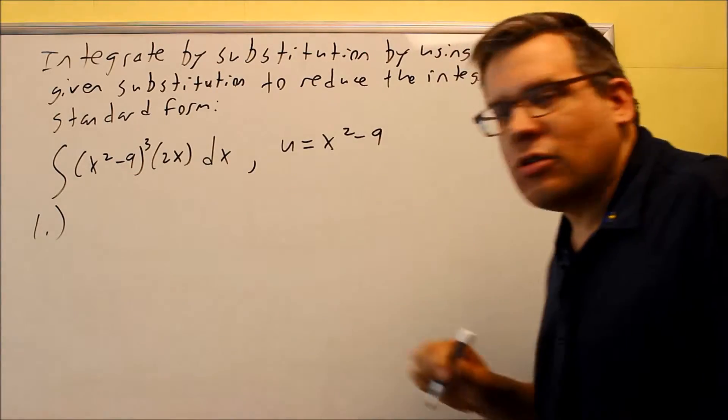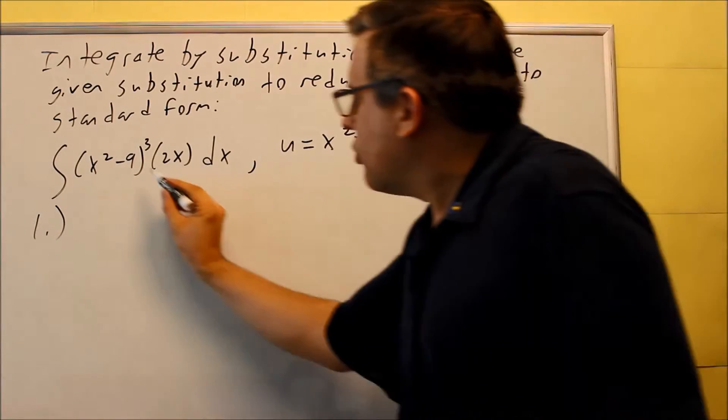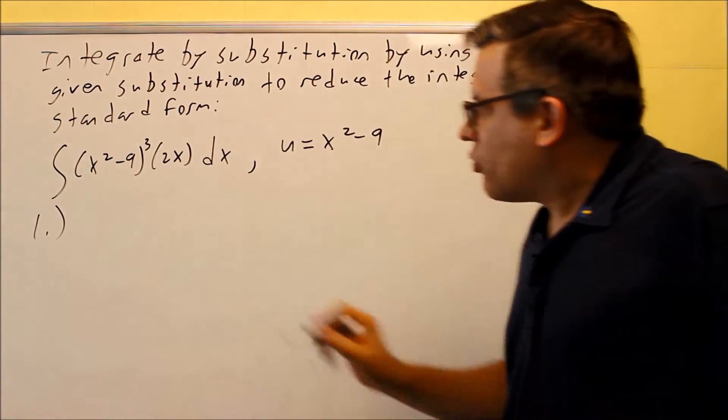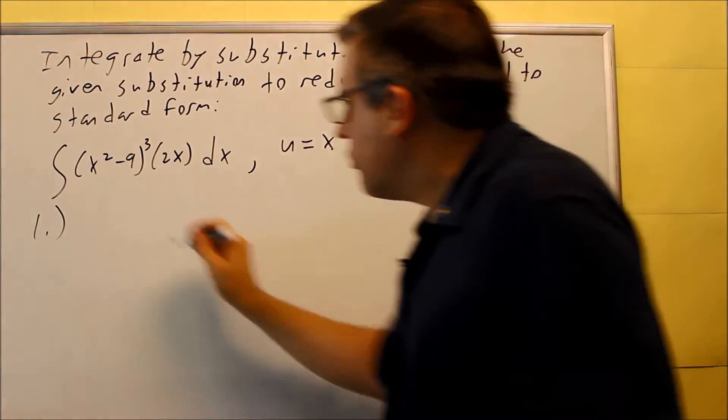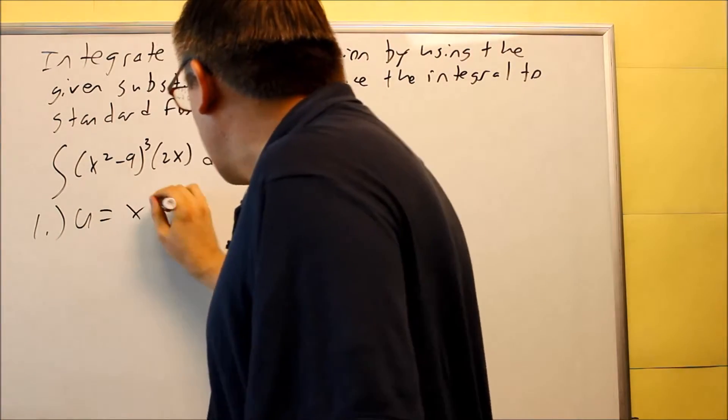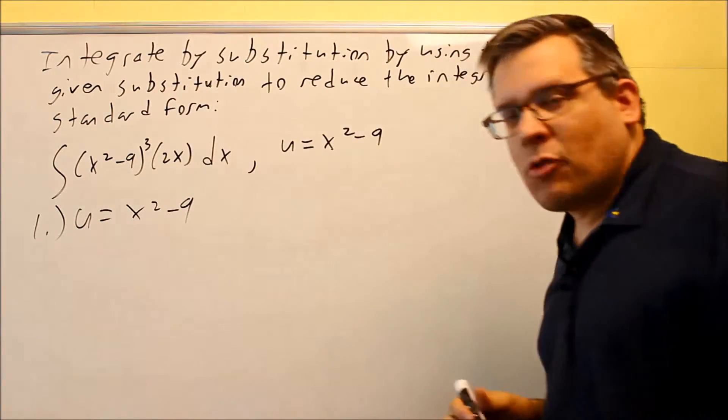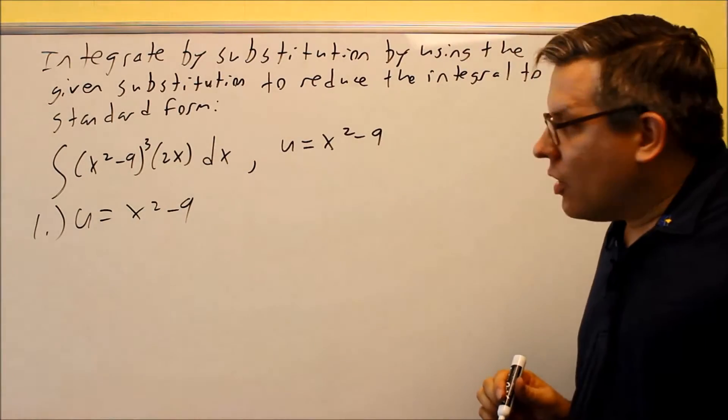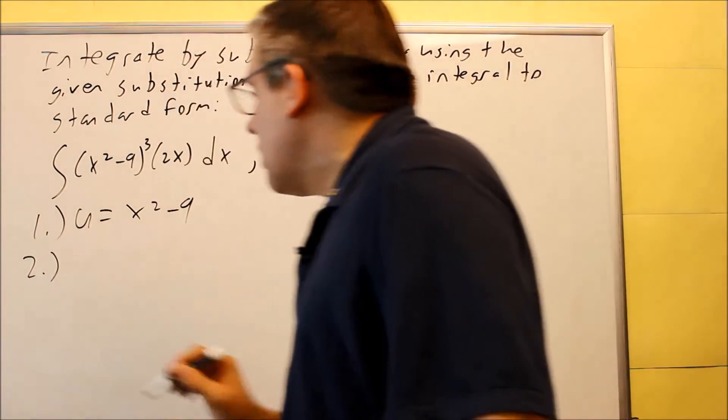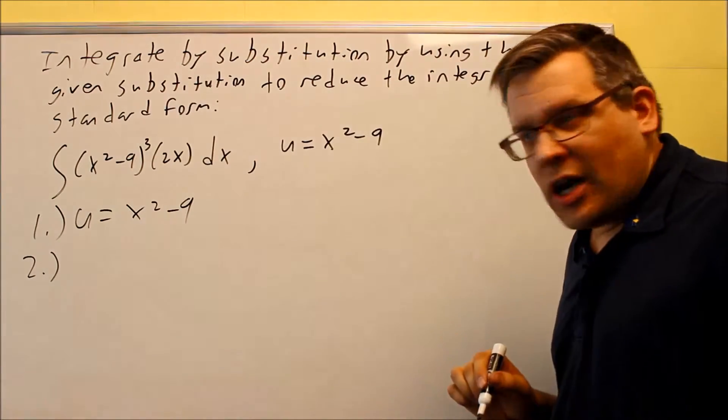But eventually you're going to pick that u on your own and usually you just look for something inside of something else. We have a 2x but usually you go for the one that has the higher power. So we're going to let u equal x squared minus 9. It already told us that before but if this was a regular problem I'd be choosing that from the problem itself.